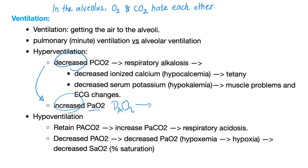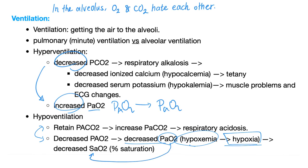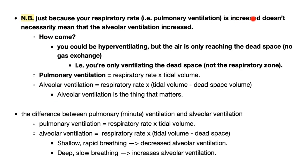Hyperventilation leads to washing out CO2 and respiratory alkalosis. This causes decreased ionized calcium (hypocalcemia) leading to tetany, and decreased potassium (hypokalemia) causing muscle problems and EKG changes including the famous U wave. Decrease CO2, increase oxygen. If alveolar PO2 is high, PaO2 is high — as long as there is normal gas exchange. With hypoventilation, you're retaining CO2, which increases PaCO2 and that causes respiratory acidosis. If CO2 is retained and high, oxygen is going to be low — they are always opposite in the alveolus. This leads to decreased PaO2, called hypoxemia, one of the causes of hypoxia. If PaO2 is low, SaO2 is low.